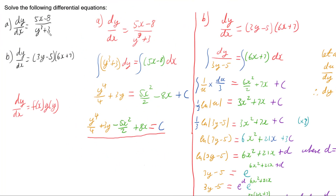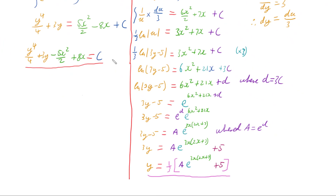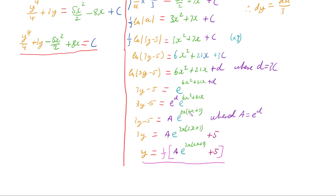To solve differential equations that have both x and y in them — usually as a product of two functions — we can separate out the two variables. This gives us functions we can integrate in terms of their independent variable, and then we need to tidy them up. Sometimes, if we can't isolate a single y, we leave it as an implicit function; otherwise, we can rearrange to get y as an explicit function of x.